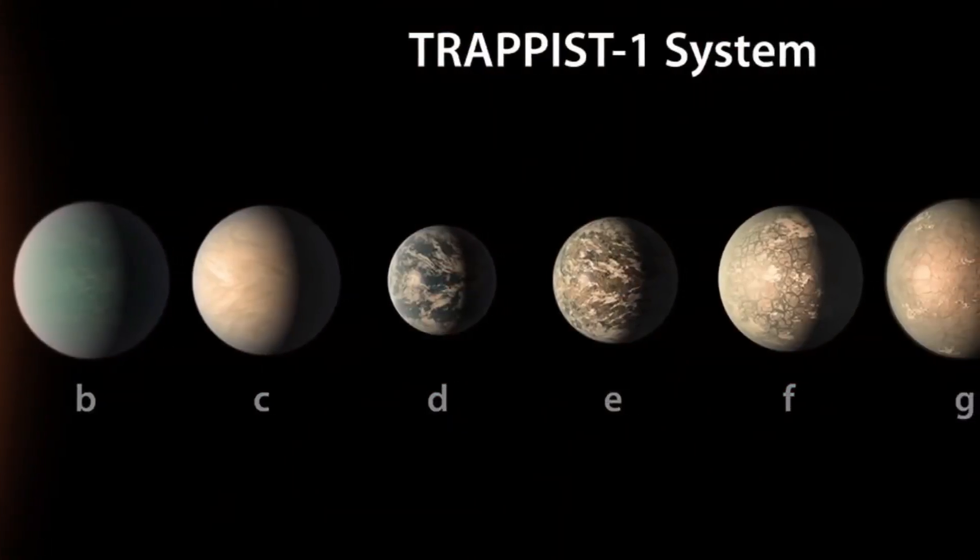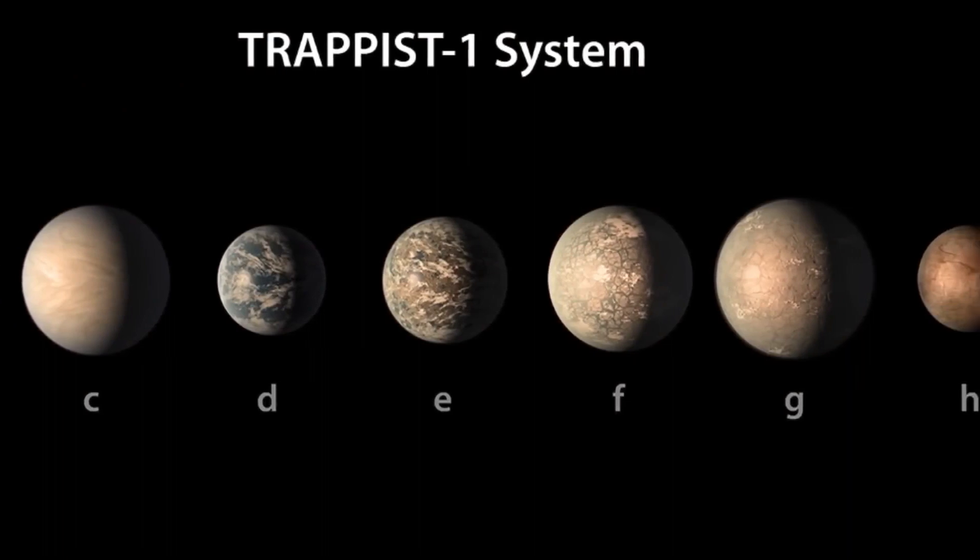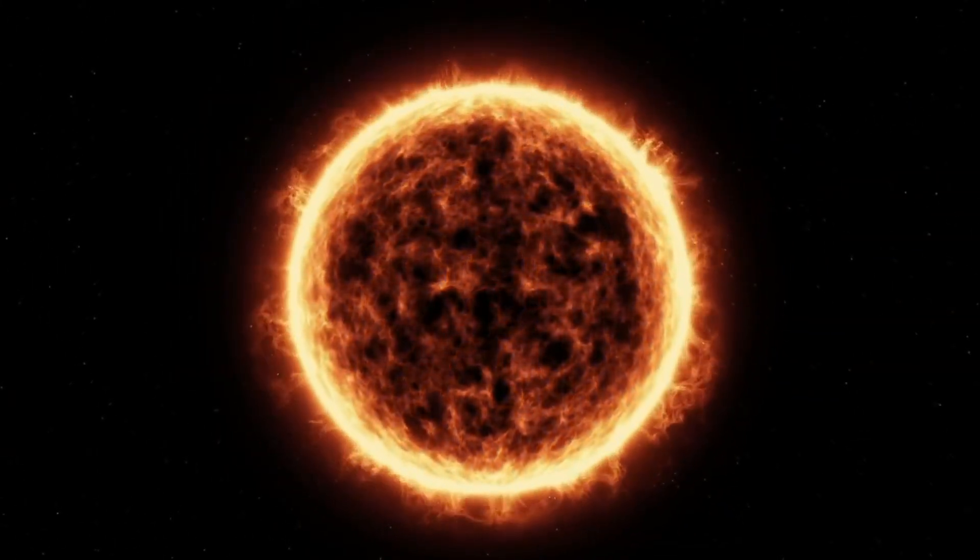The TRAPPIST-1b planet is the closest to the sun. Its orbital distance is about one-tenth that of Earth, and it gets about four times as much energy from the sun as Earth does. Its orbit is about 100 times closer to it than Earth's is.